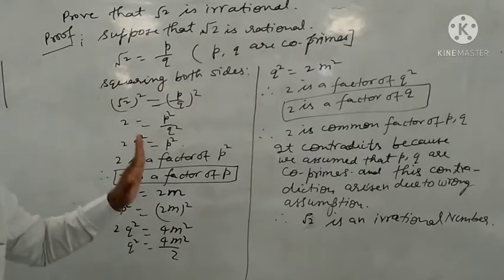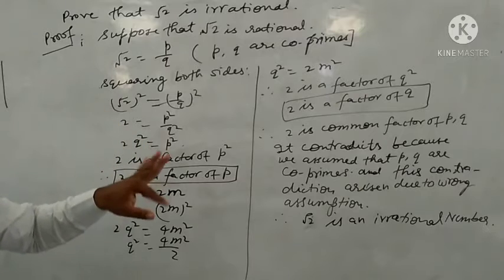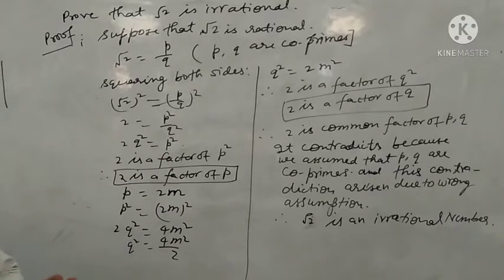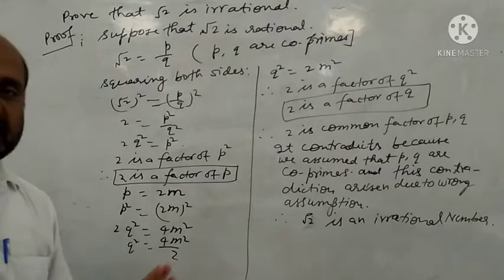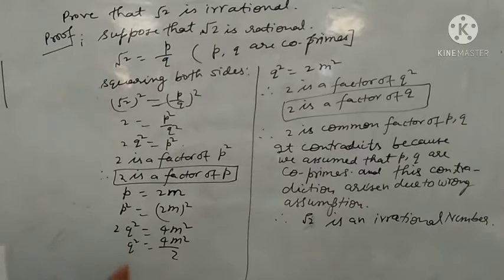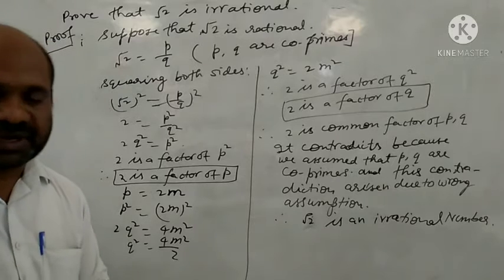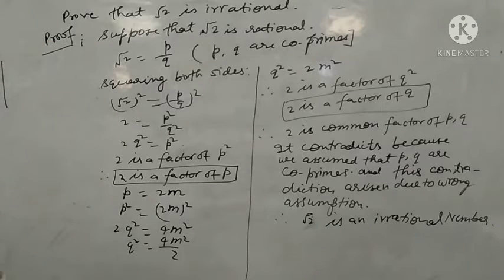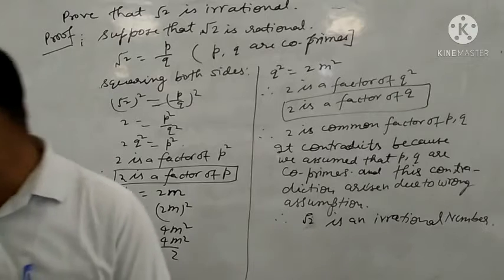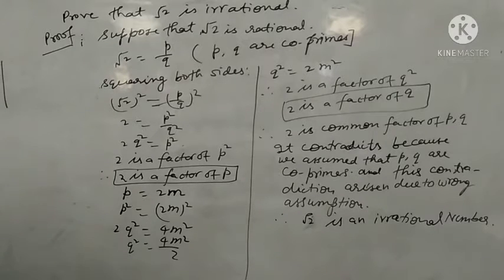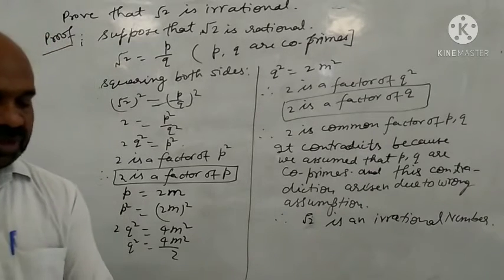Similarly, we can prove that √3, √5, and √7 are also irrational numbers. The same method of proof applies to all of them. Now let's come to Exercise 1.3.